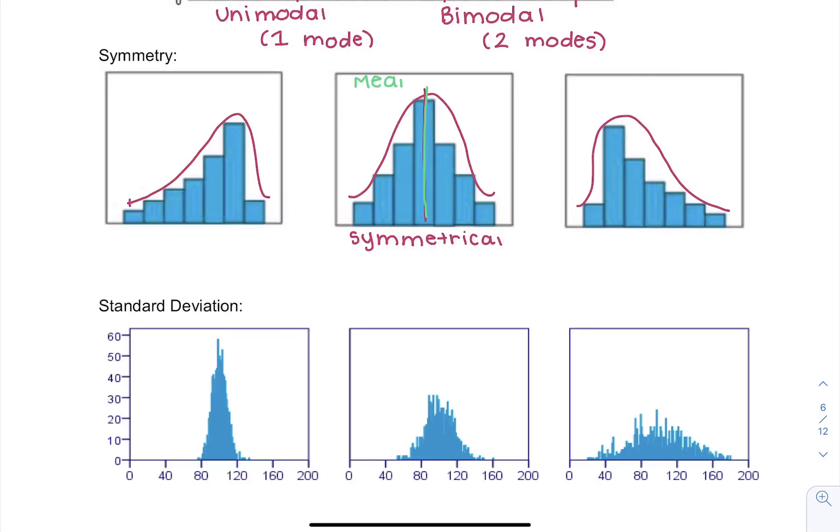Now let's look at the two graphs on the left and the right. This first graph is called skewed to the left.